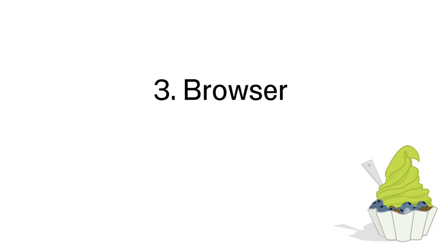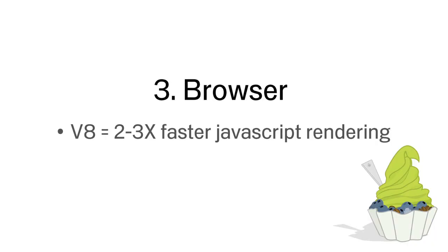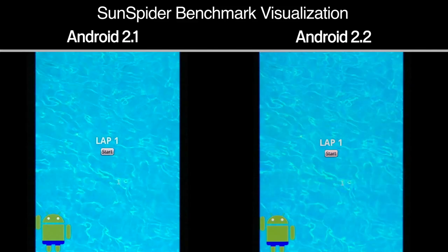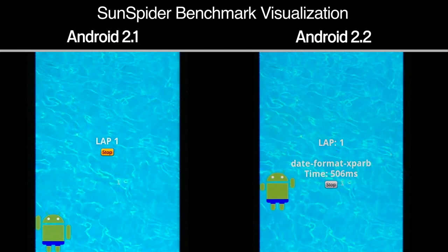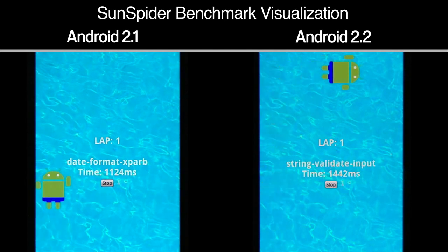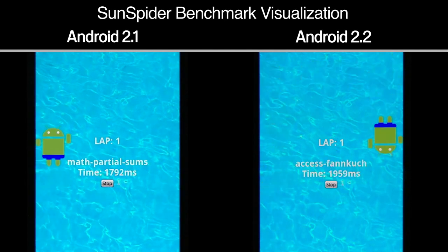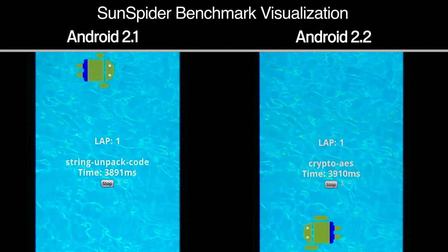We're continuing to make the browser better and faster. Android 2.2 introduces the V8 JavaScript engine, which provides a 2 to 3x improvement in JavaScript rendering times compared to Android 2.1. You can see the difference in these side-by-side visualizations of the respective SunSpider JavaScript benchmarking test results.